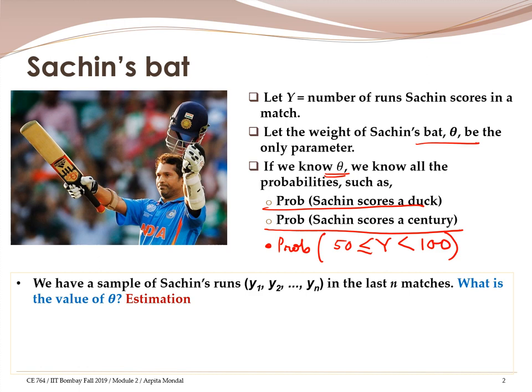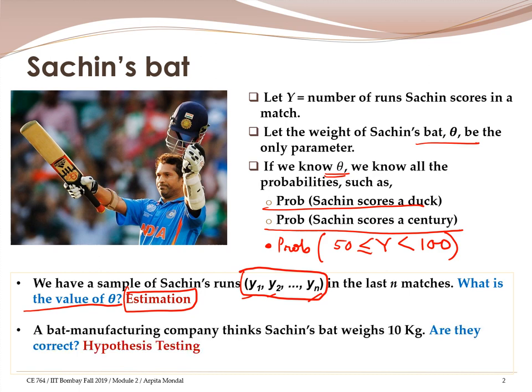What we have is a sample of Sachin's runs in the last n matches — say n equals 100 matches. We have his score in the last 100 matches: y1 in the first match, y2 in the second match, and so on, with yn being his actual observed score in the nth match. If we ask the question 'what is the value of theta?', the problem becomes one of estimation — we need to find theta from this sample.